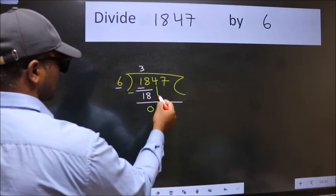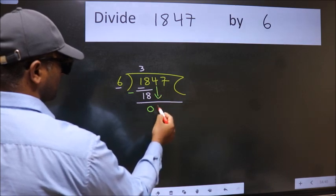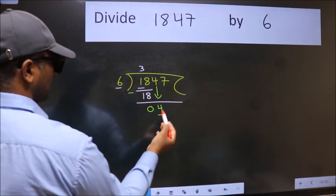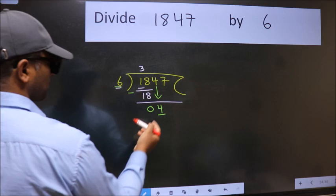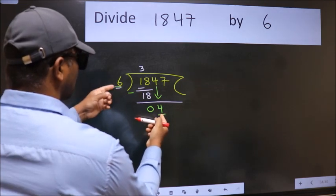After this, bring down the beside number. So, 4 down. Now here we have 4 and here 6. 4 is smaller than 6.